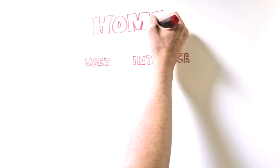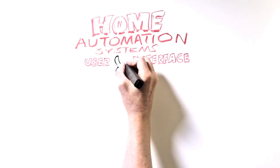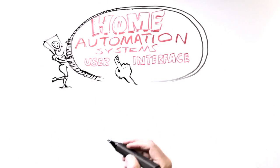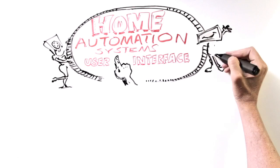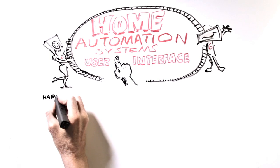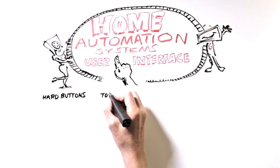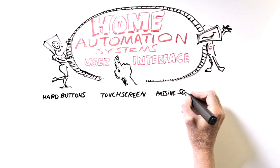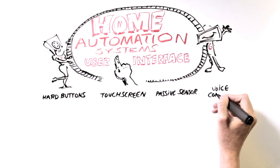User Interface is the term used to describe the way people communicate with their home automation systems. There are four main types of user interfaces: hard button, touch screen, passive sensor, and voice command.